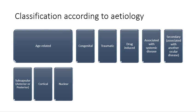Most lens opacities, i.e. cataracts, exist either in the outermost region or the deepest region of the lens. If we start by looking at age-related cataracts first, these are classified by the zone of the lens involved, and so there are three subcategories: subcapsular cataract, cortical cataract, and nuclear cataract. Let's take a closer look at these before we move on to any other etiological types.